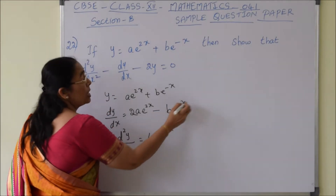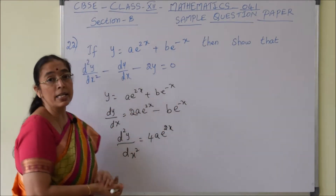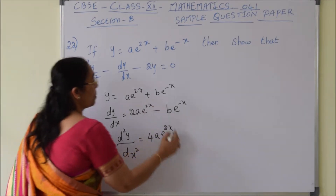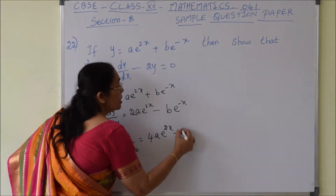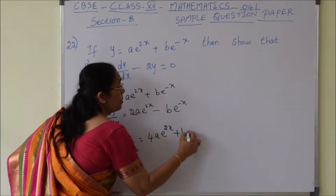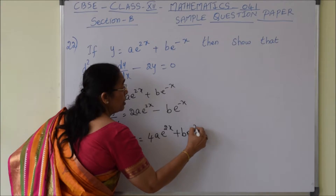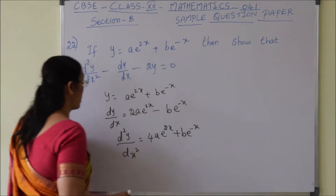Now, e^(-x) differentiation is minus e^(-x), so this will become plus be^(-x). Therefore d²y/dx² equals 4ae^(2x) plus be^(-x).